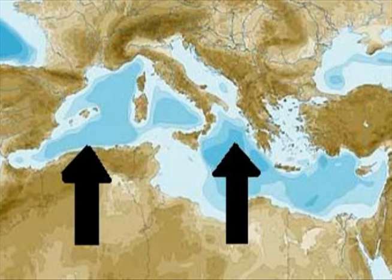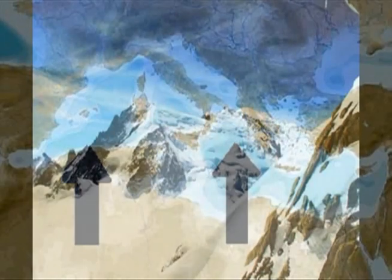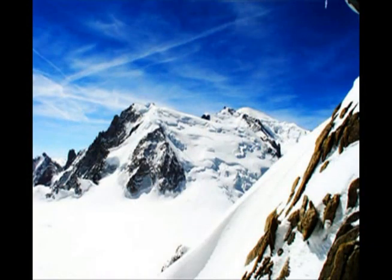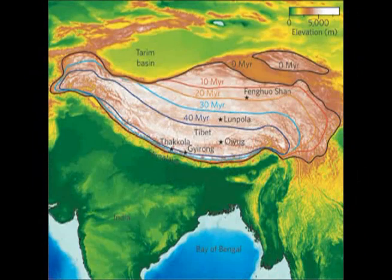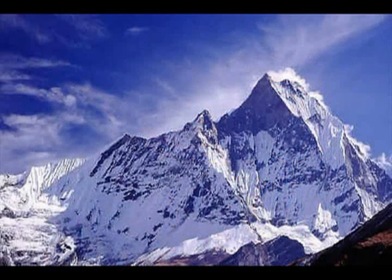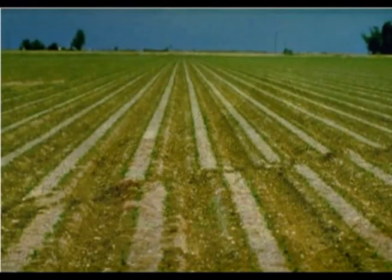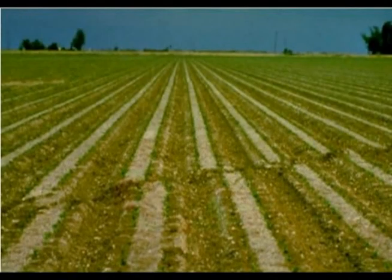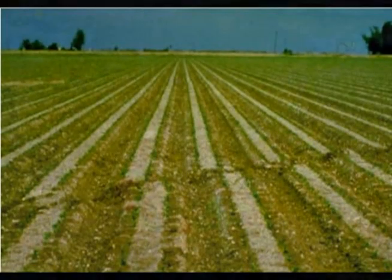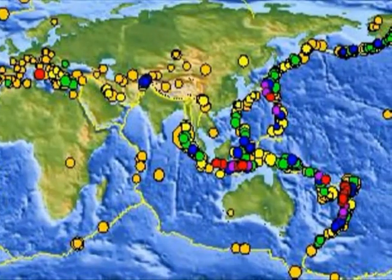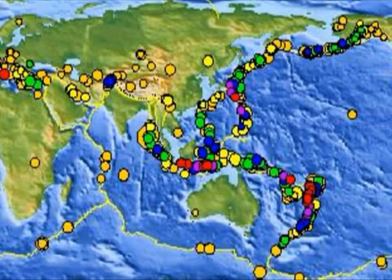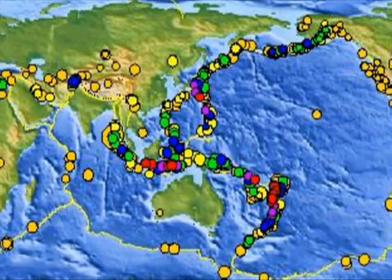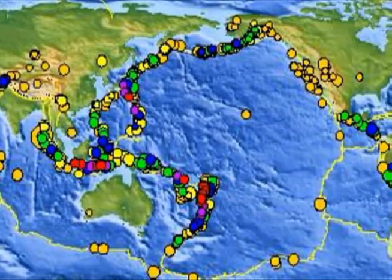As Africa and Europe collide, the Alps rise about one millimetre a year, and as India and Asia collide, they force up the Himalayas five times faster. Plate tectonics also showed that earthquakes aren't the action of a vengeful god — they're the buckling and jarring along the edges of the crustal plates.